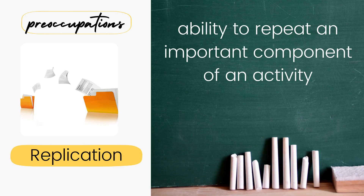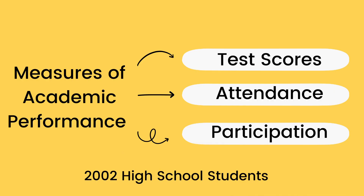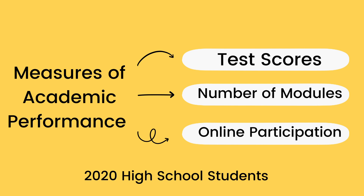The last preoccupation is replication. It is the ability to repeat an important component of an activity in another group, another population, or in another period of time. For example, the measurements used to measure academic performance in the past 10 years can still be used to measure the academic performance of students today. However, given that there is a pandemic, some considerations for certain variables like attendance and participation should be altered to another measurement or parameters to adjust to this different setting.